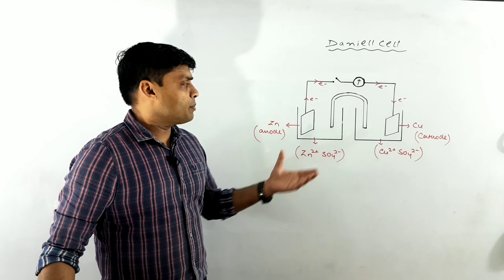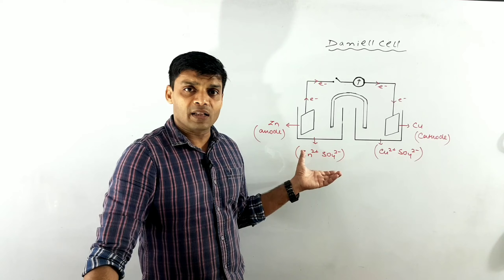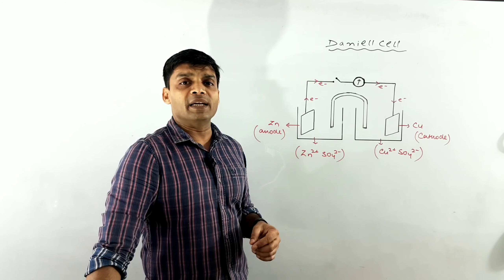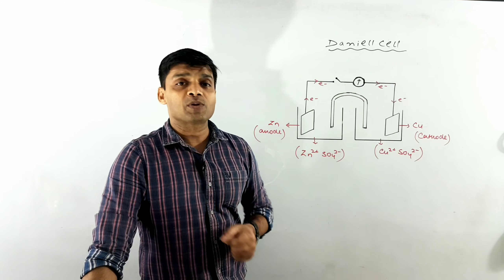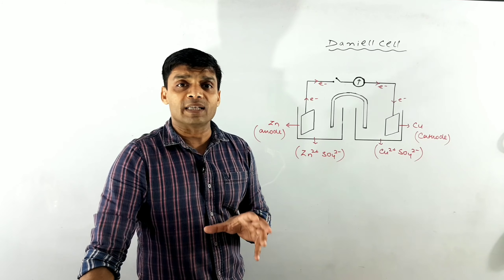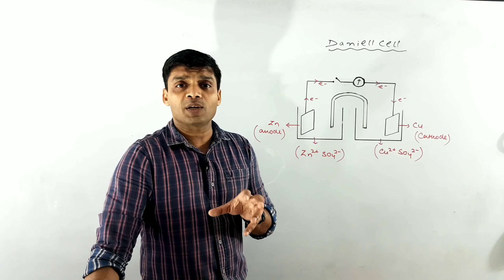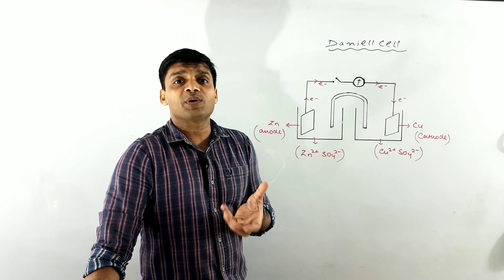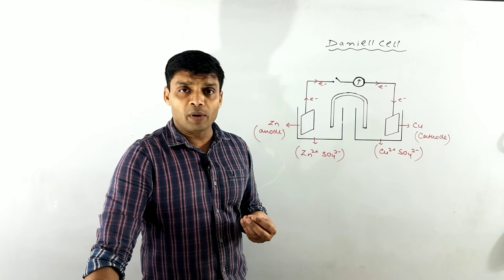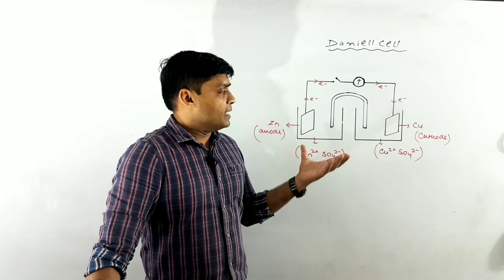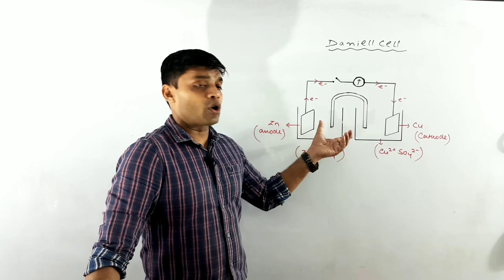In my last video lecture, I gave a very important example of the Daniel cell. Within this particular Daniel cell, which is an example of an Electrochemical cell — electrochemical cells are devices which use a spontaneous chemical reaction to generate electricity. This was a particular example of an Electrochemical cell: the Daniel cell, also called the Galvanic cell, which is a Zinc and Copper combination.